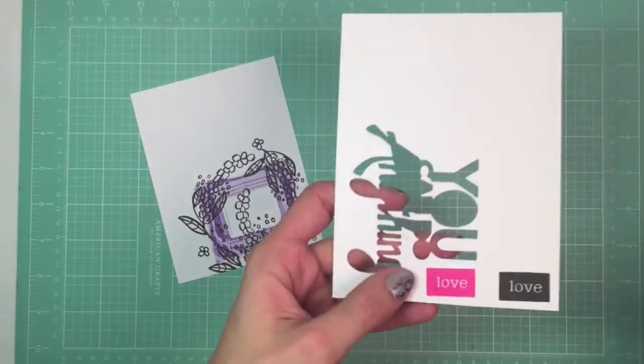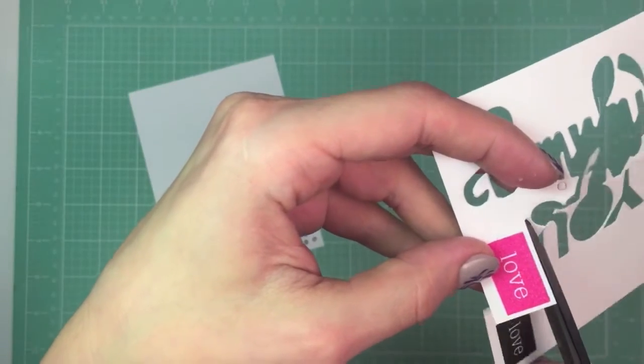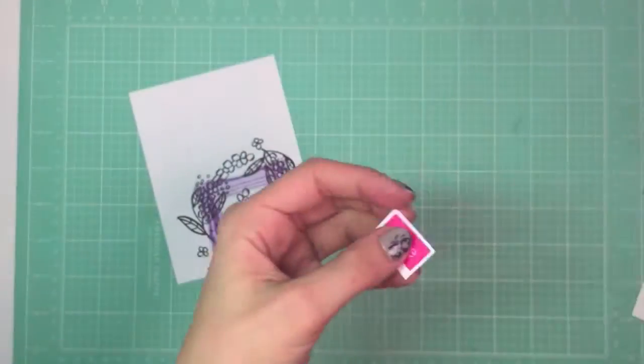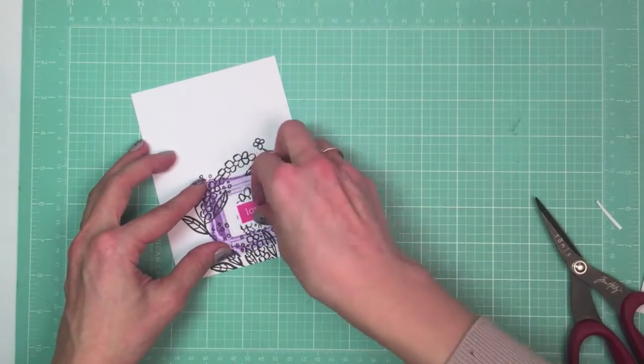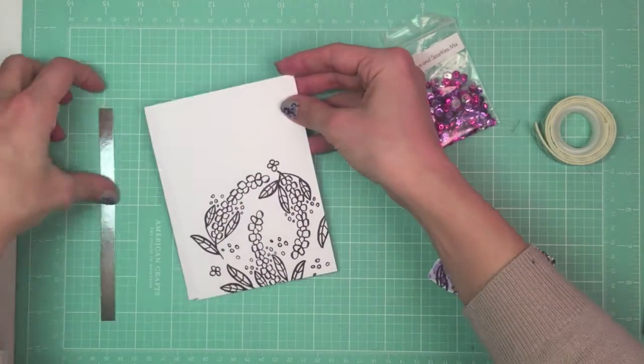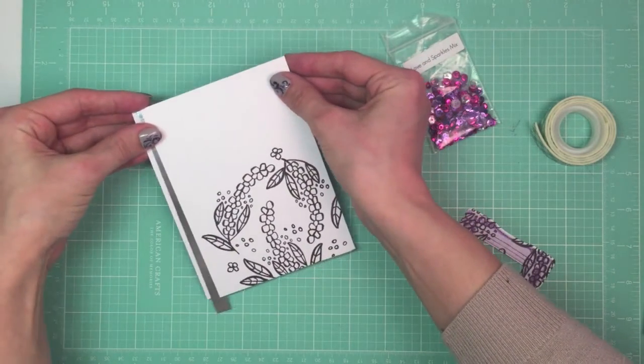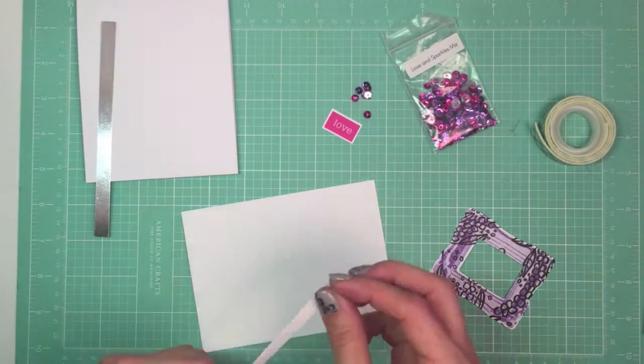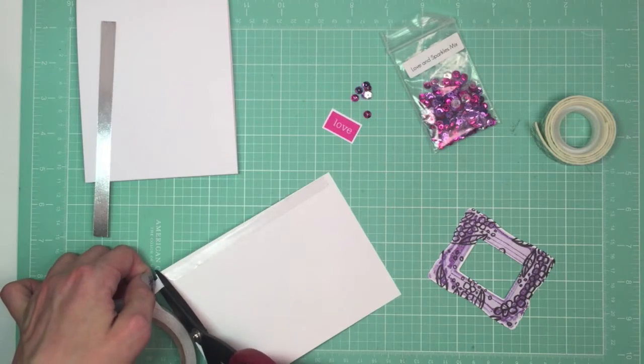For my sentiment, I used the Everyday Label stamp set and stamped the Love word in bright pink to add some color accent to my cards. As you see, I fussy cut it with my scissors. I also plan to add some sequins from the Love and Sparkles mix from Neat and Tangled that will coordinate nicely with that pink color. I also cut a strip of silver metallic paper to add some interest to my card.